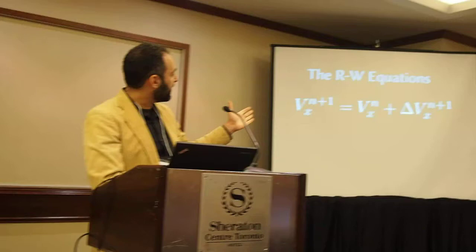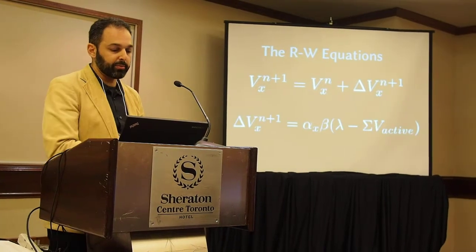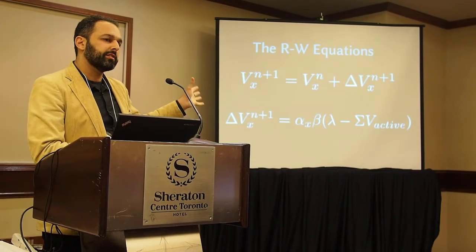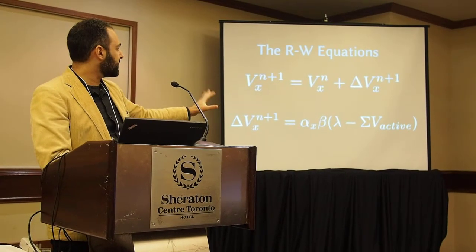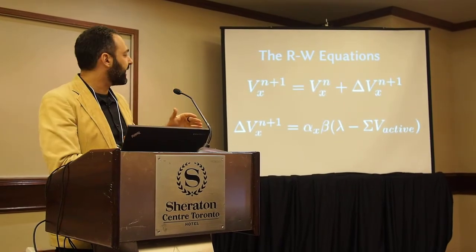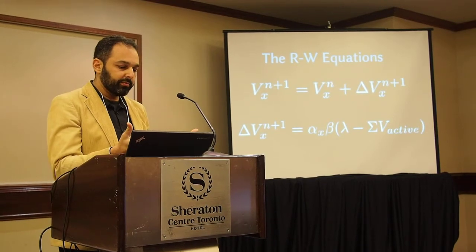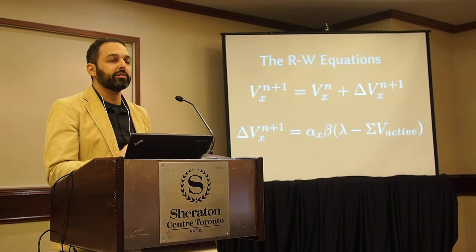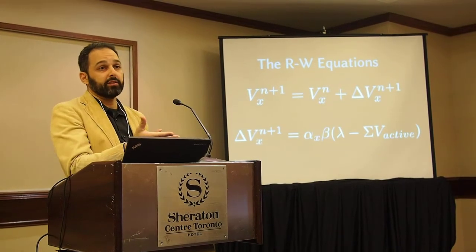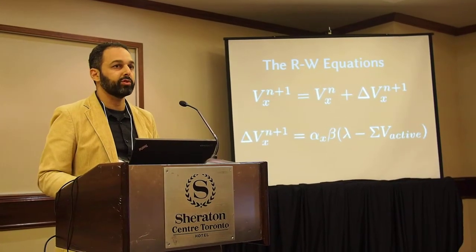Basically the idea is that you have an association weight based on the weight at the previous time step plus some delta. That delta depends on certain constants — alpha, beta, and lambda (a maximum value). Since this is a language situation and not a rat in a cage, we treat these as constants. If a stimulus is active and an outcome is present, you add; if the outcome is not there, you subtract. That's the key of Rescorla-Wagner — the delta rule. It's a very simple training algorithm.